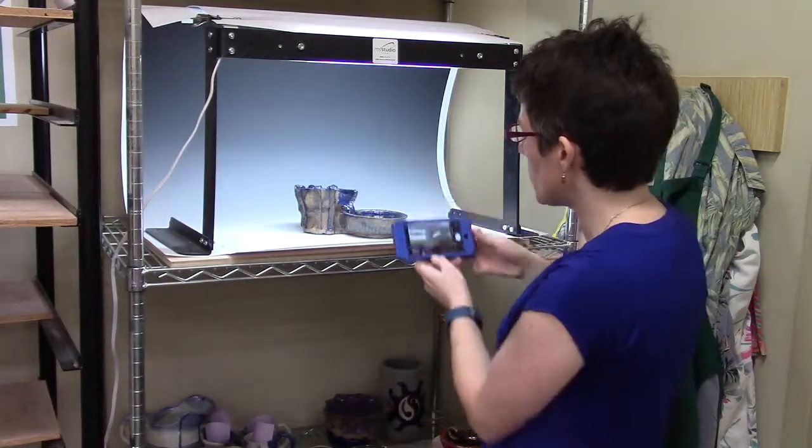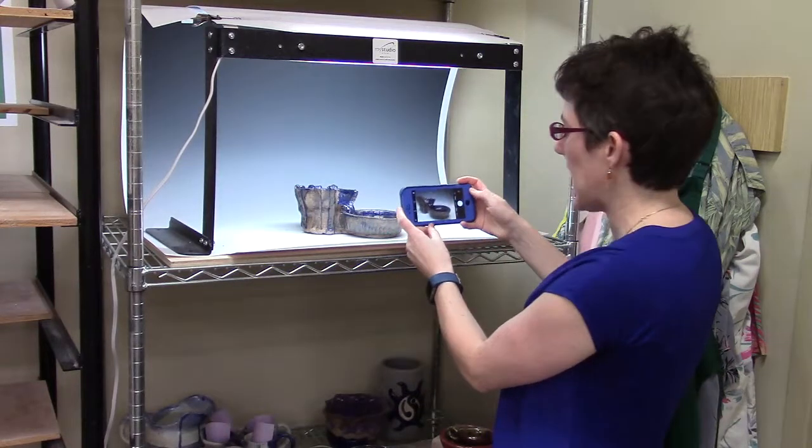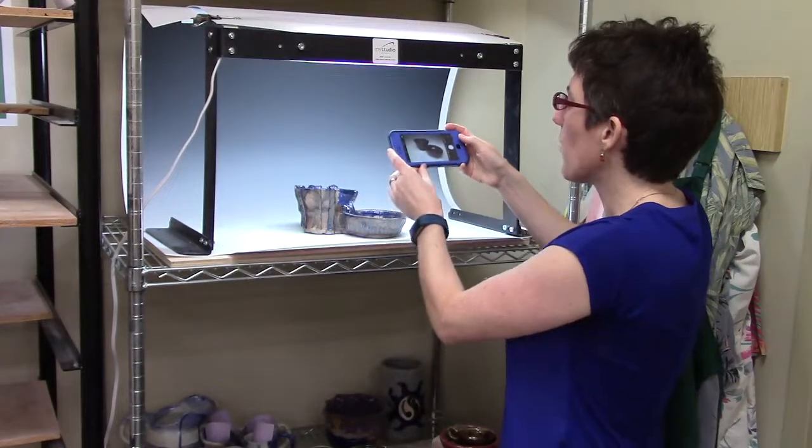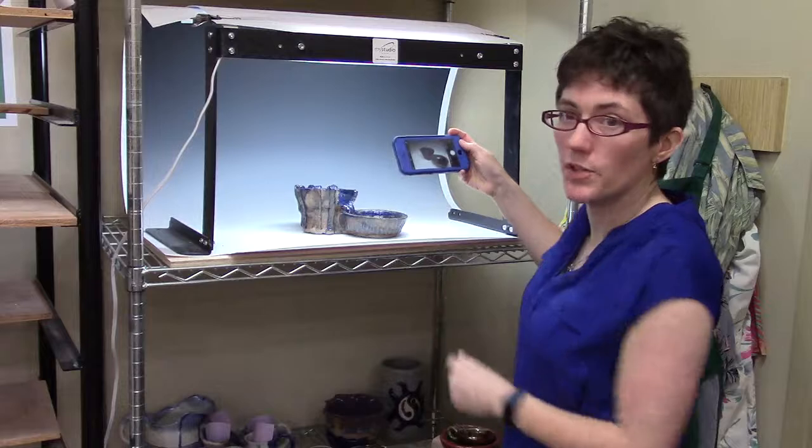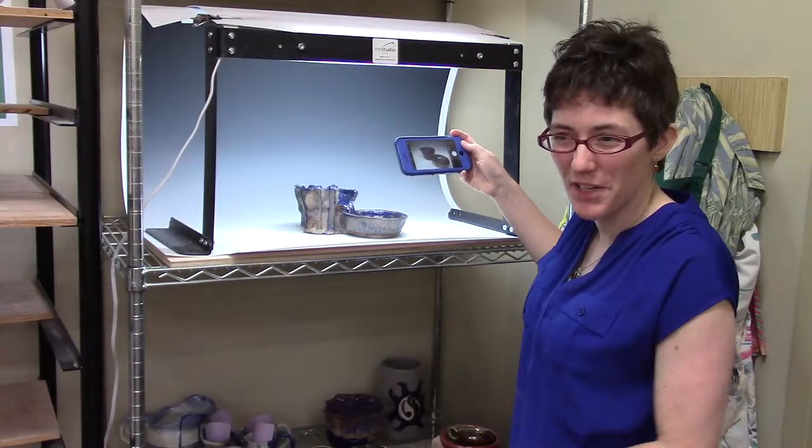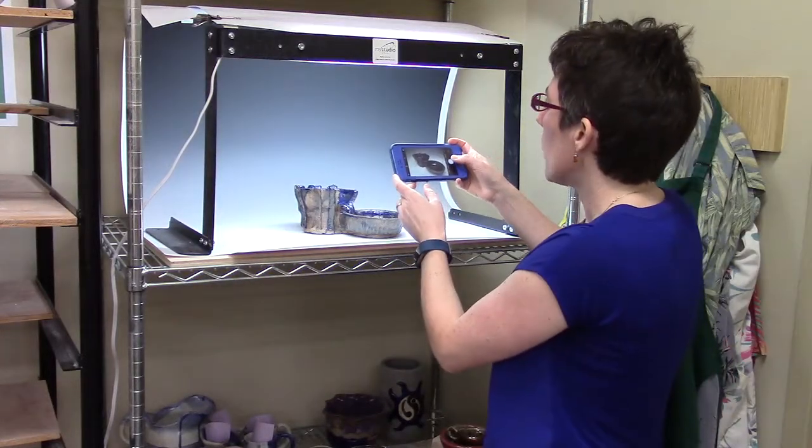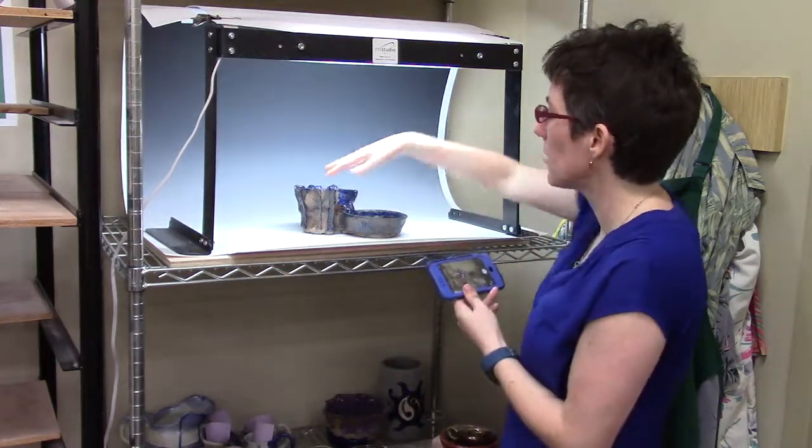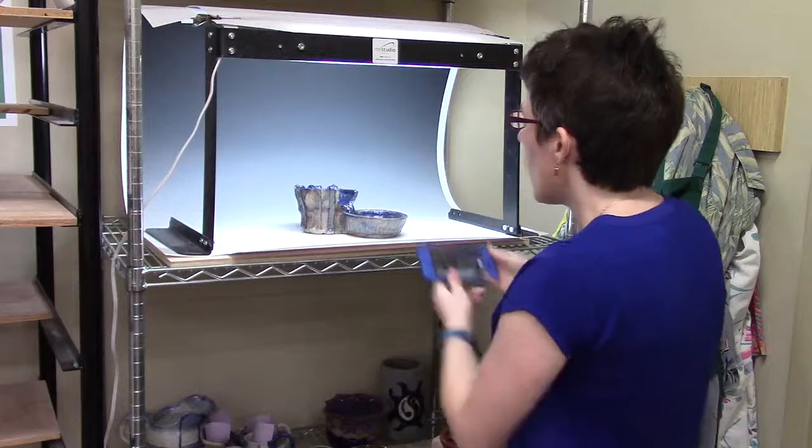Now I can also adjust the angle that my camera is at. Right now I'm kind of lined up with the piece. If I bring my camera up a little higher, and we do have stools, so if you're shorter than me we can get you up on a stool, you can take a picture from a higher angle and you can see what's going on inside.